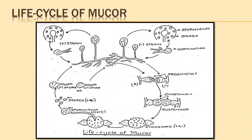Let us now look into the life cycle of Mucor. The diagram of the life cycle shows both asexual and sexual modes of reproduction. Asexual reproduction shows the formation of spores in the sporangium and their germination into new mycelium. Sexual reproduction takes place between two opposite strains of mycelium. The diagram clearly shows the formation of gametes, conjugation between the gametes, and the resulting formation of a zygospore. Germination of the zygospore gives rise to a sporangium, and again spores are formed. This cycle continues as shown in the diagram.